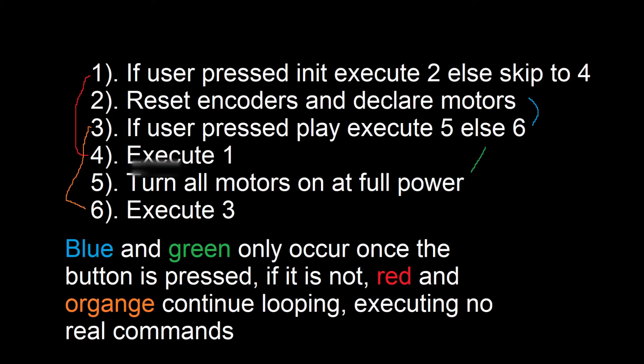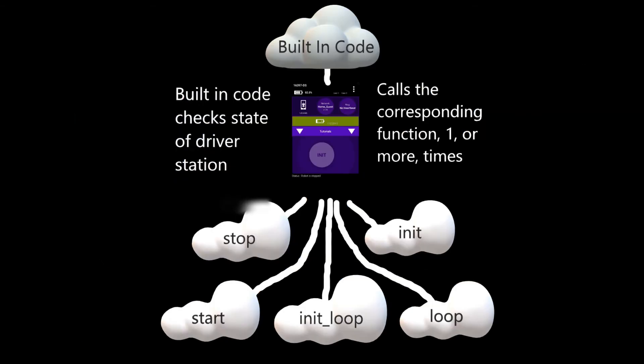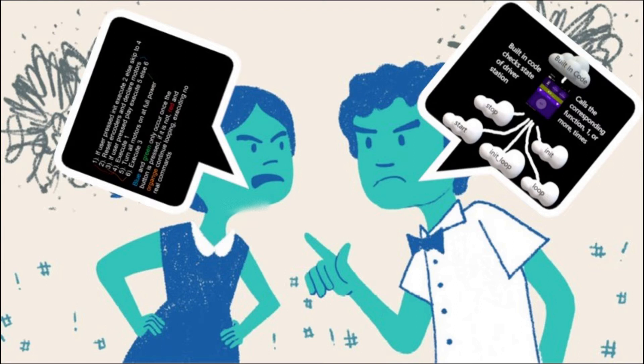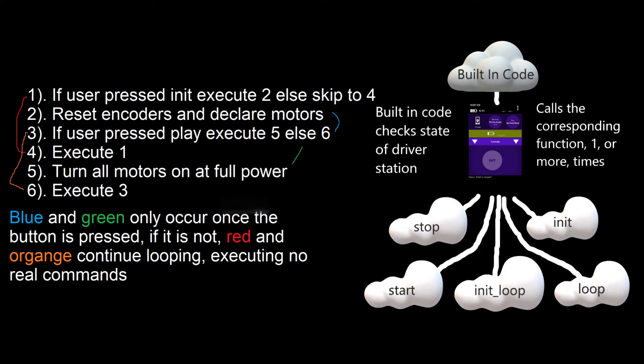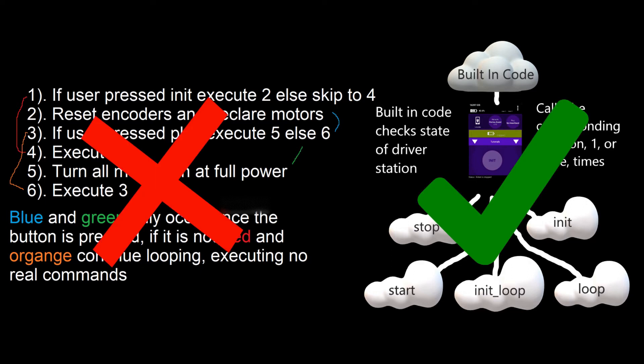Essentially, the linear style controls the program flow through the use of custom while and if-statements, whereas iterative controls program flow through the use of five automatically called functions. The choice of which style to use is fully personal and dependent on your style of programming. However, we will be primarily using the iterative style for this tutorial series.